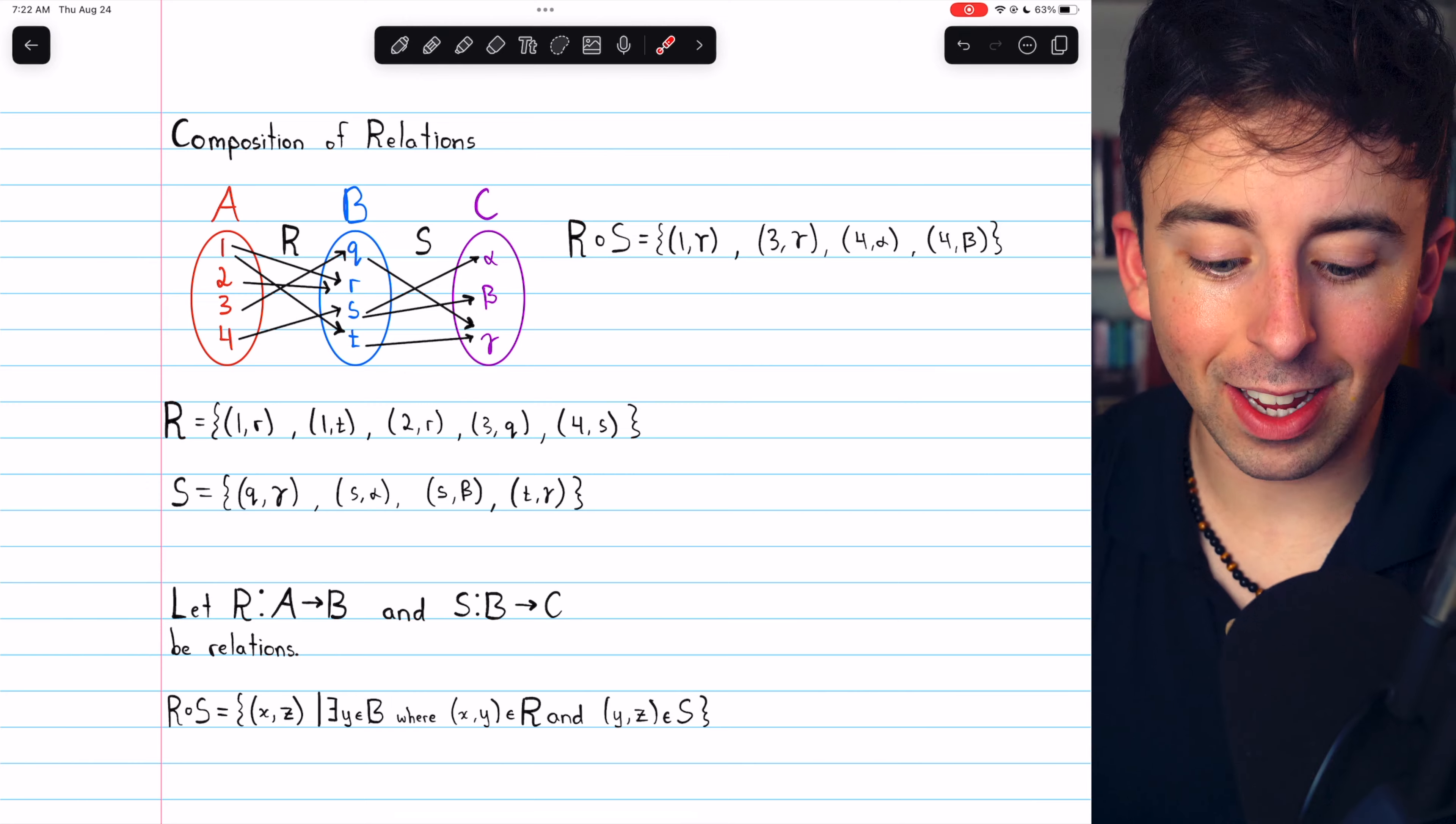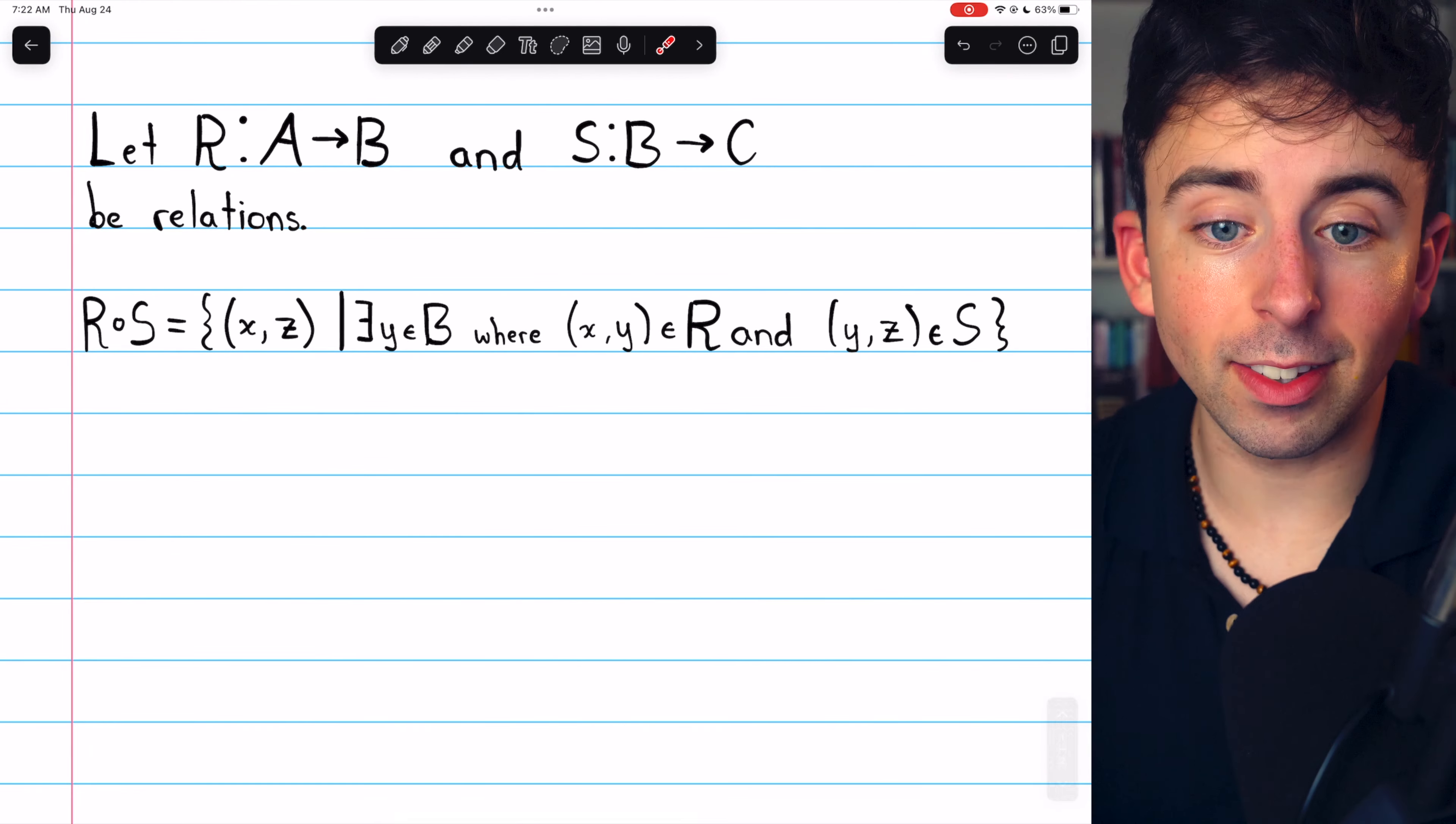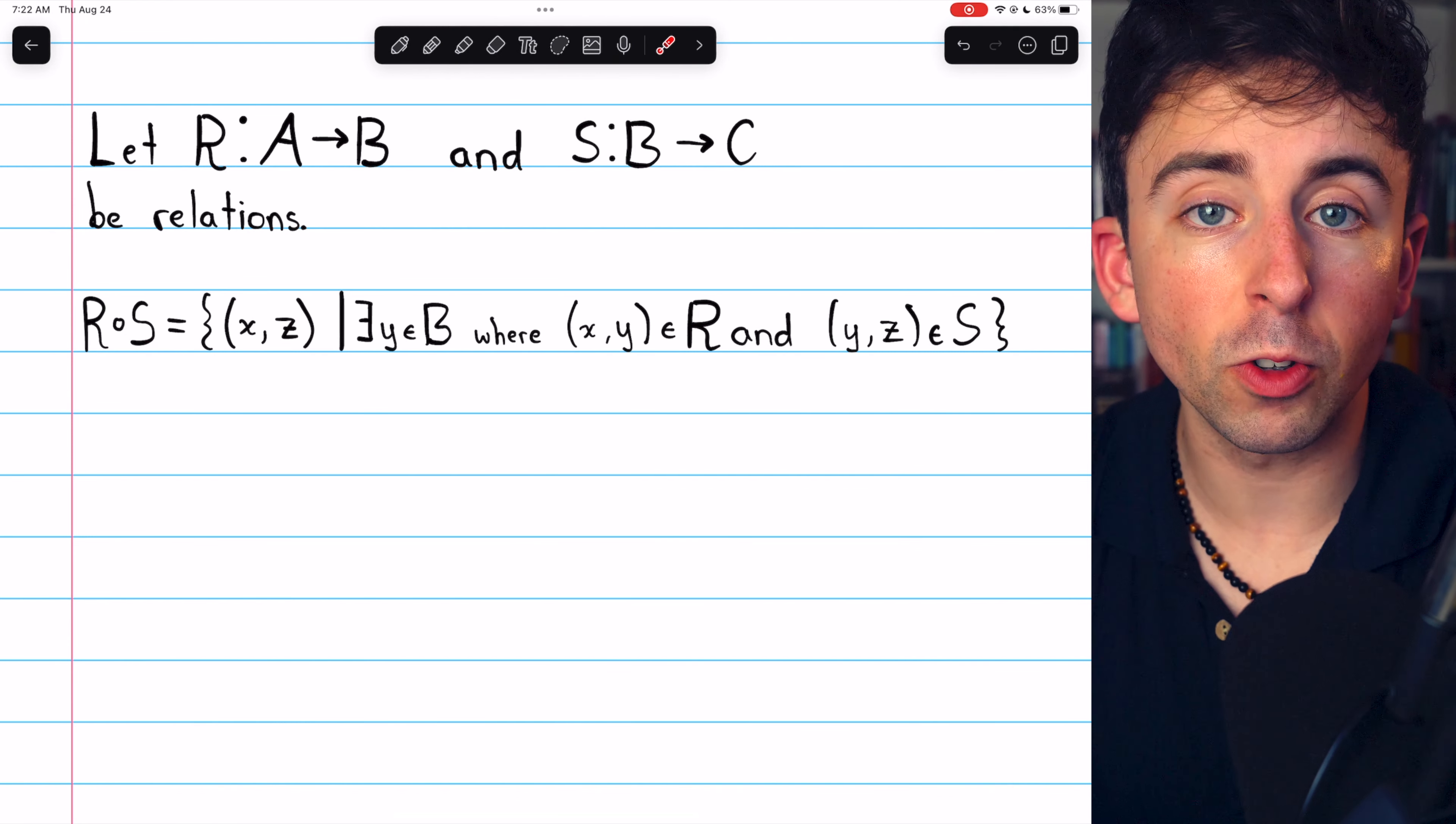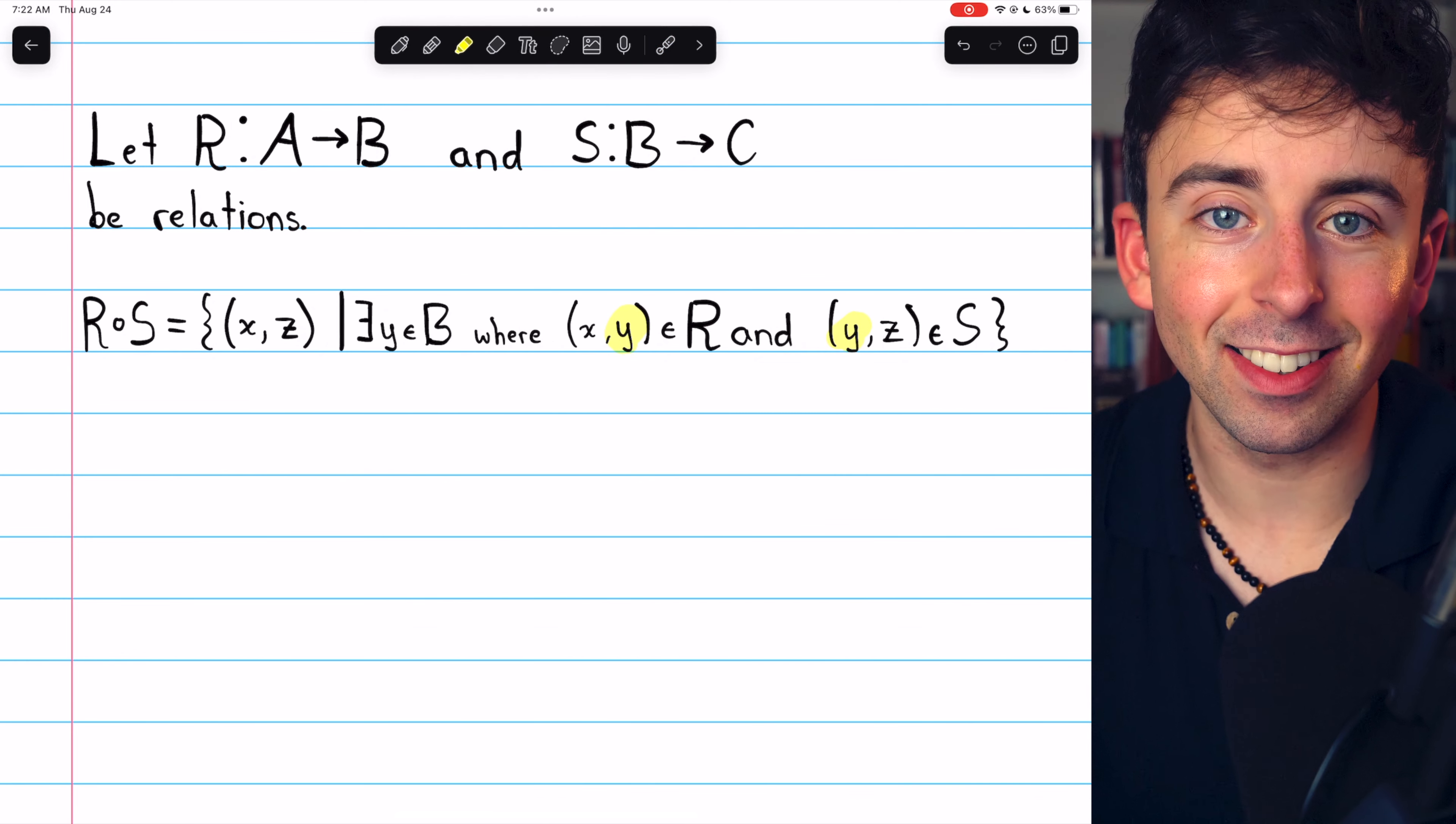Now let's take a quick look at the general definition of a composition of relations. You can see how an ordered pair X, Z is in the composition of relations if there's some middle element connecting X and Z.